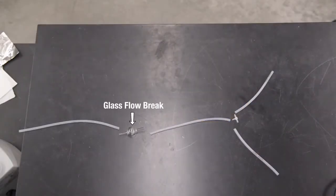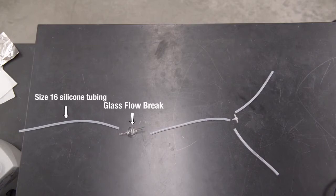Orient a glass flow brake with the internal tube at the top and attach it to the tubing. Add another length of size 16 silicone tubing to the top of the flow brake of adequate length to reach the media carboy.